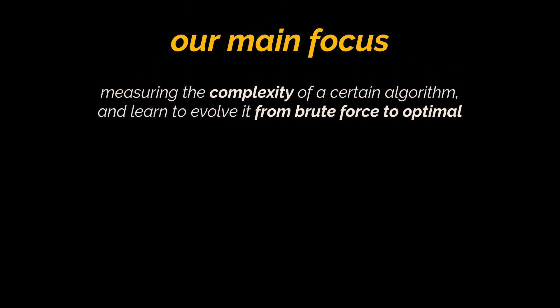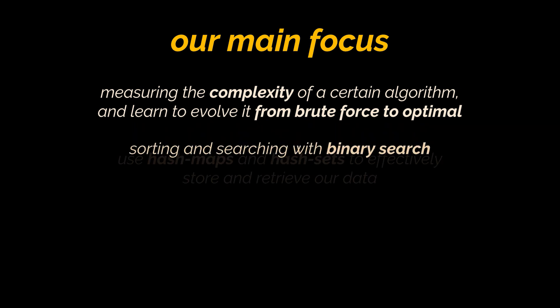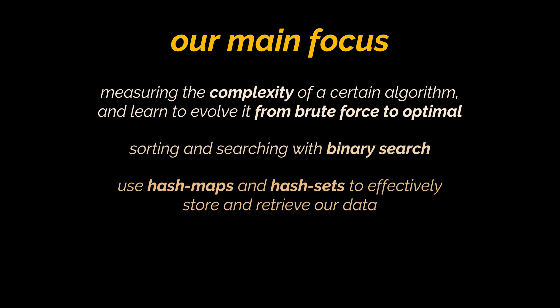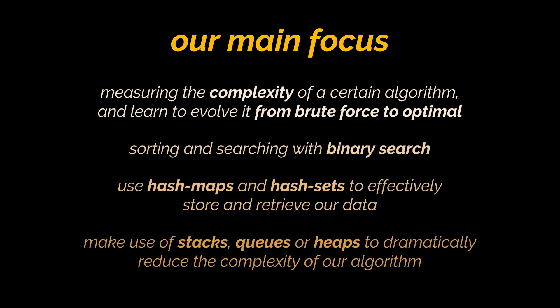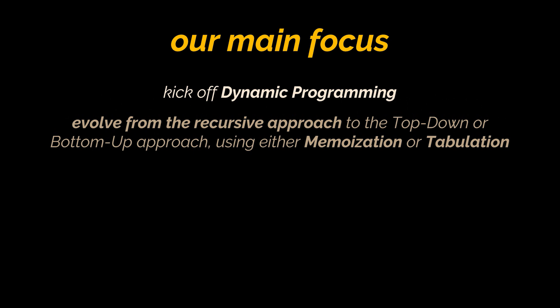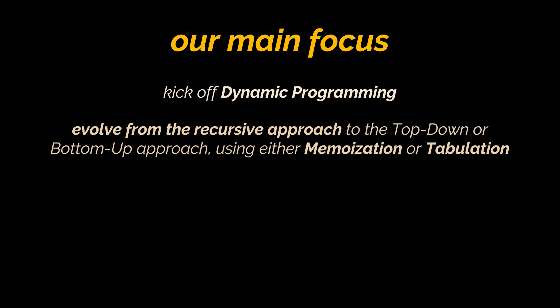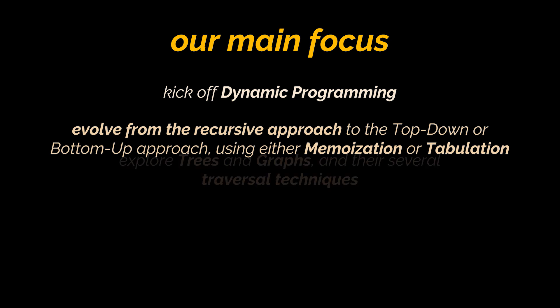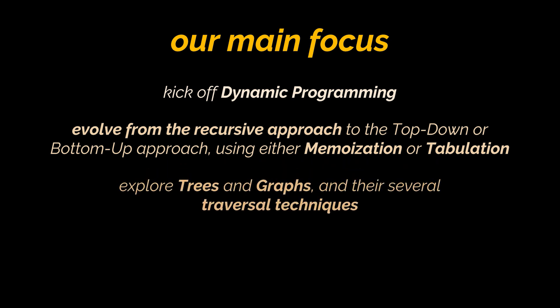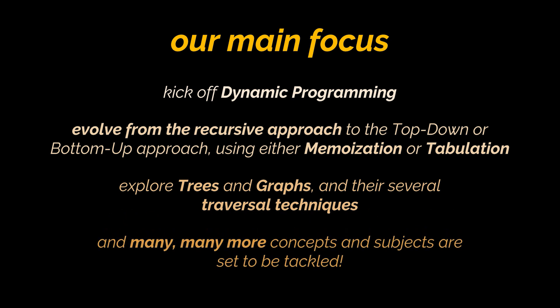Now while solving problems, we will focus on several ideas: measuring the complexity, or the Big O notation of a certain piece of code, and learn how to improve it by evolving from the brute force to the optimal approach. Sort and search with binary search. Use hash maps and hash sets to effectively store and retrieve our data. See how and when we should make use of stacks, queues, or heaps, as in most cases they can dramatically reduce the complexity of our algorithm. We will also kick off dynamic programming and learn how to evolve from the recursive approach to the top-down or bottom-up approach using either memoization or tabulation respectively. Not to forget trees and graphs and their several traversal techniques, as it is kind of guaranteed that you will be asked at least a question around this topic. And many, many more concepts and subjects are set to be tackled.